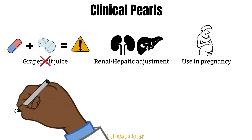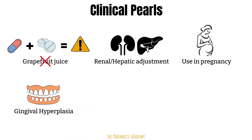Calcium channel blockers may cause gingival hyperplasia, which is a condition that refers to an overgrowth of the gums. The prevalence ranges from 30 to 50 percent of patients who use these medications long-term. The dihydropyridines tend to be more commonly associated with this complication, with one suggested mechanism being an increase in testosterone levels which promotes the hyperplasia. Remember to counsel patients to maintain good dental hygiene while on these medications.